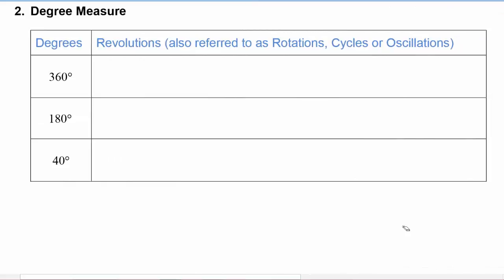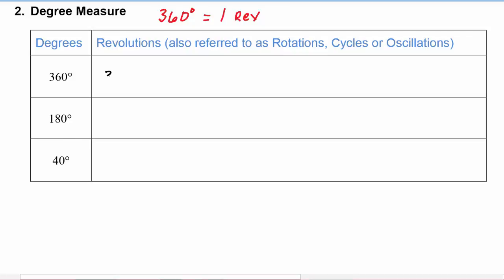Next we're going to look at degree measure. We know that 360 degrees is equal to one full revolution, so we can convert between degrees and revolutions using that conversion factor. So 360 degrees multiplied by the conversion factor of one revolution per 360 degrees — the 360 and the degree symbol cancel — and we're left with one revolution.